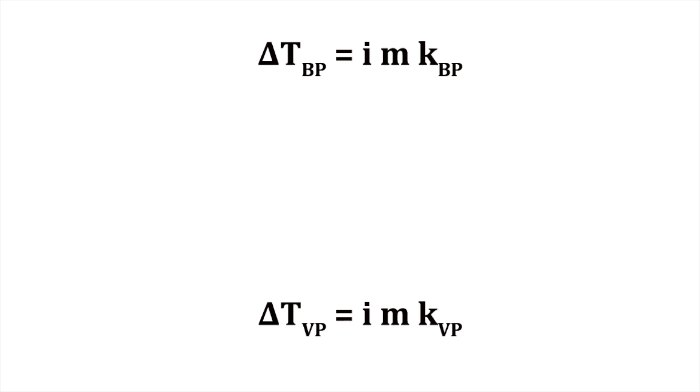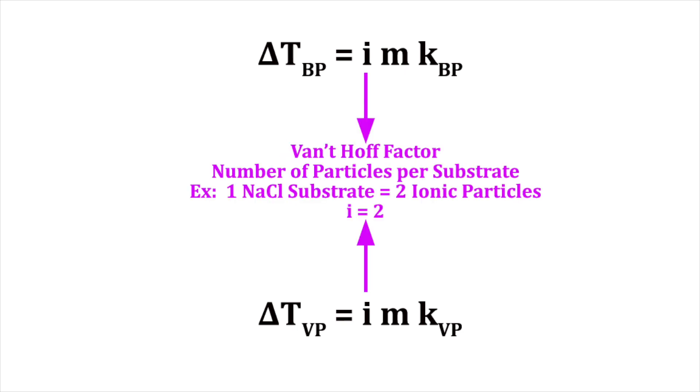The degree of vapor pressure depression and boiling point elevation depends on a few factors, as can be seen in the colligative properties formulas, which help us determine the change in boiling point and vapor pressure. van't Hoff factor, denoted by the lower case i, indicates the number of particles per substrate molecule that will dissolve in water. The greater the number of particles dissolved in water, the greater the degree of vapor pressure depression and boiling point elevation.